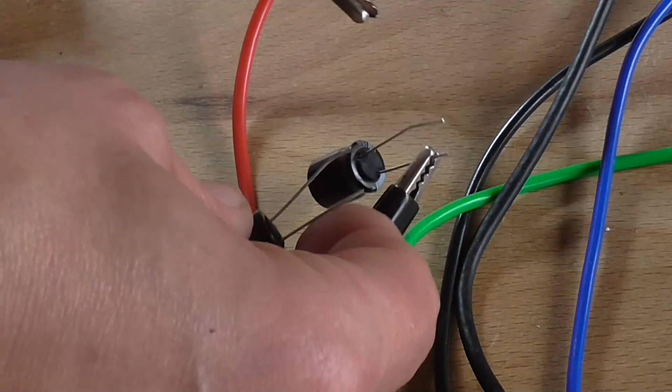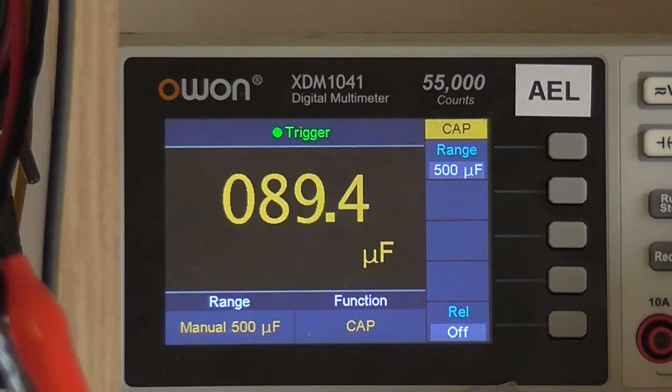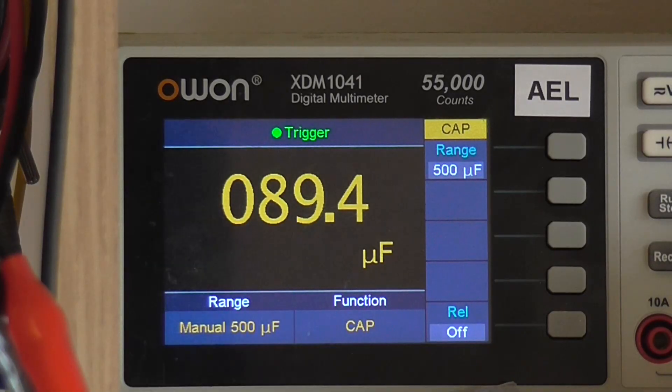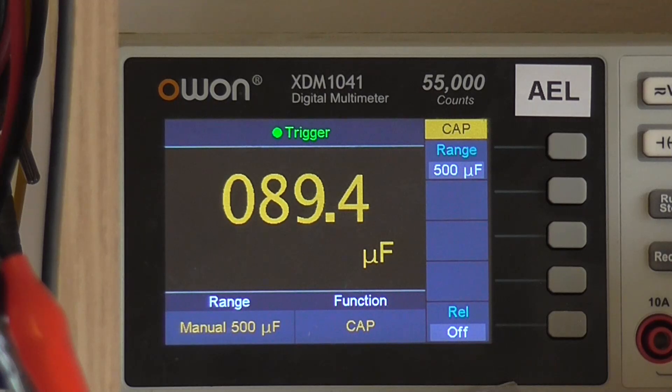So just connect that. Connect that to there. Connect that to there. 99.4 microfarad. Okay. If it's a 20% tolerance component I suppose that's valid unless that capacitor has been destroyed. So I'll take another new one and I will connect it up across the meter and see if we get a different result with a completely new one that's never been used.